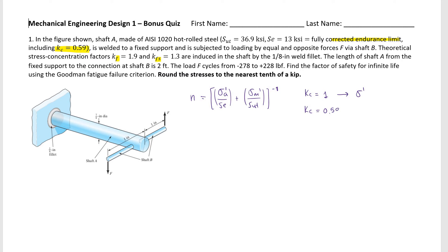In this case, since the endurance limit they gave me already includes the 0.59 factor, meaning I should be using tau — not von Mises. I have two options: either use the Goodman equation directly for the factor of safety with tau, or use von Mises and then use a different SE — basically dividing 13 by 0.59 to get a value comparable to von Mises. Or just use this with tau.